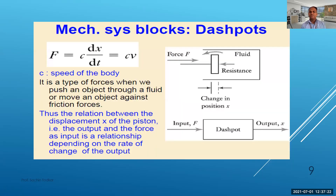For a dashpot, f equals C times dx/dt. We are taking the derivative of displacement, and dx/dt is velocity, so force is directly proportional to velocity. C is the dashpot constant, also called the damping constant. It represents the type of force when pushing an object through a fluid or against friction. The relation between the displacement x of the piston and the applied force depends on the rate of change of output — the first derivative of displacement.